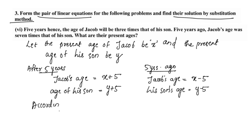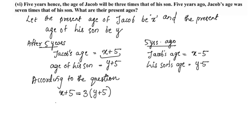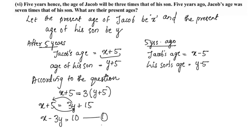According to the question, 5 years hence, the age of Jacob will be 3 times that of his son. So, x plus 5 is equal to 3 times y plus 5, which gives x plus 5 equals 3y plus 15. Simplifying, x minus 3y equals 10. This is equation number 1.